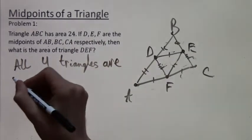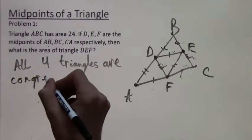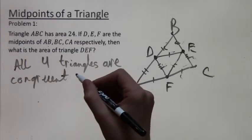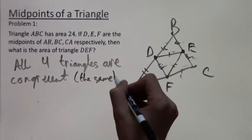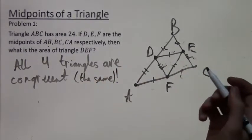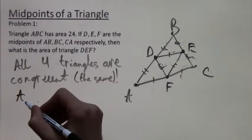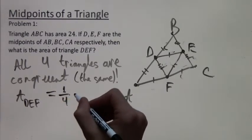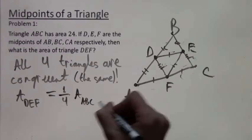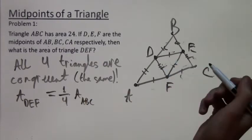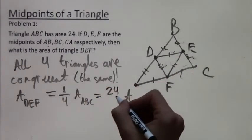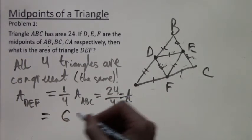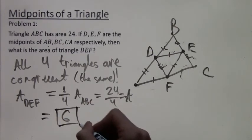So if we split our large triangle into four equal ones, and one of them is DEF, the one we're trying to find the area of, then the area of DEF will be one-fourth the area of ABC. So we can write this down. Area of DEF equals one-fourth the area of ABC. And the area of ABC is what we know. It's 24. So I get the area we're looking for is 24 over 4, and that is just 6. So that solves the problem.